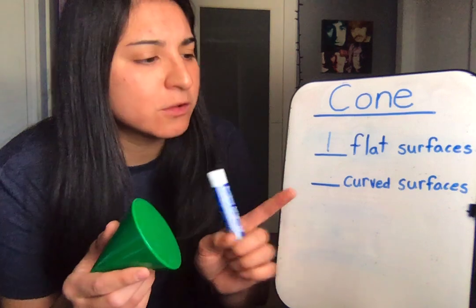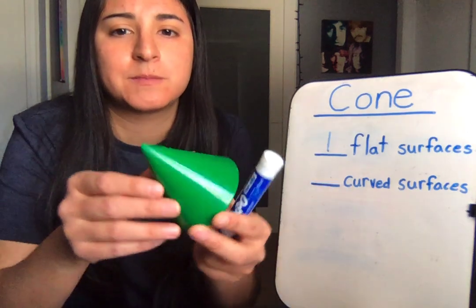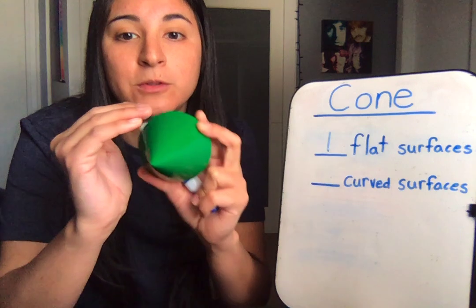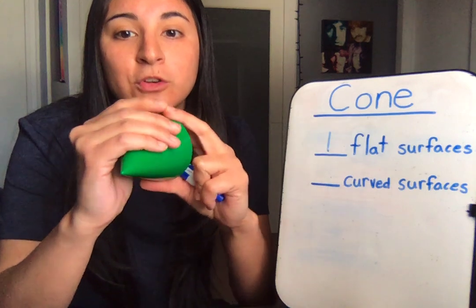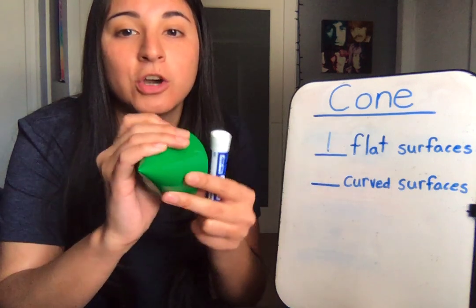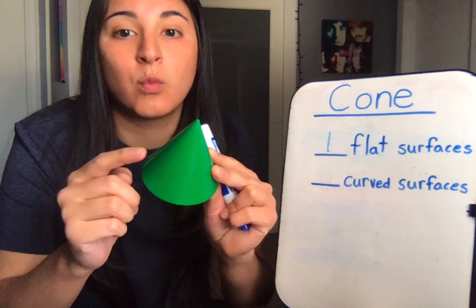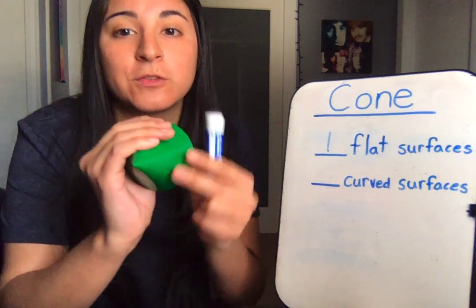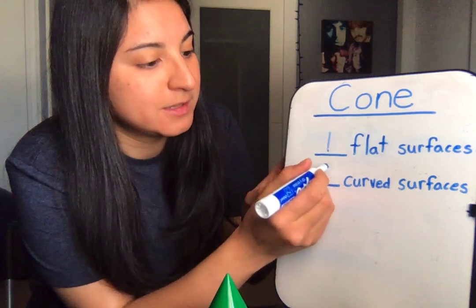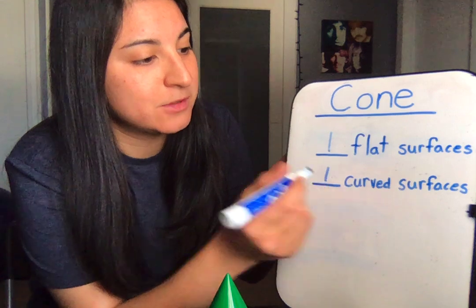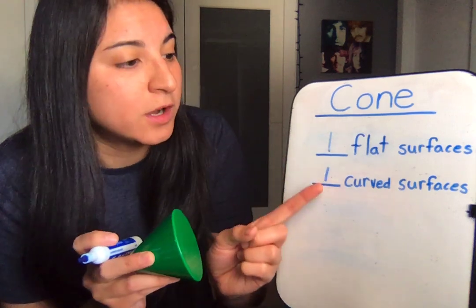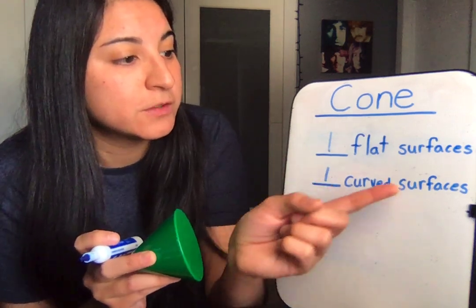Let's look for the curved surfaces. Remember, we can put our hand like this to help us remember curved surfaces. A cone has one curved surface. Let's say it together: a cone has one curved surface.